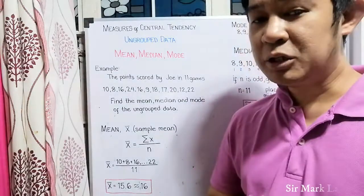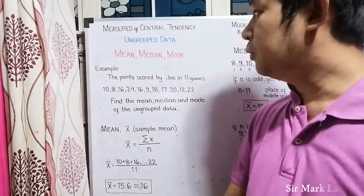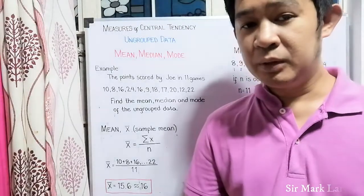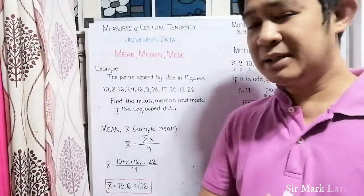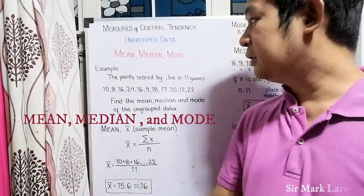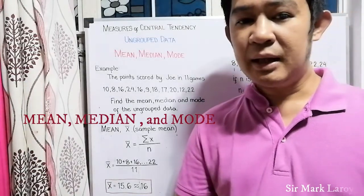Now, I will be discussing the measures of central tendency for ungrouped data. The three most common measures of central tendencies are the mean, median, and mode.